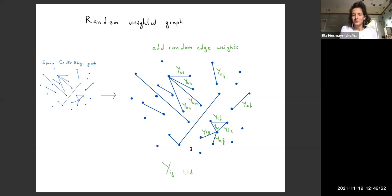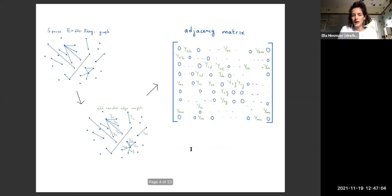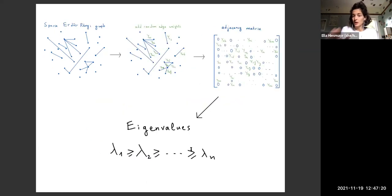The reason why we want to add weights is because in electrical networks, this can represent conductances. In social networks, it can represent the strength of a connection, and so on. Now that we have this random weighted graph, we encode it in an adjacency matrix. We put a zero whenever there's no edge between two vertices. And when there is a connection, we put the value of the random variable there.